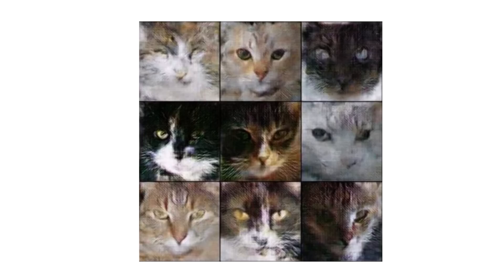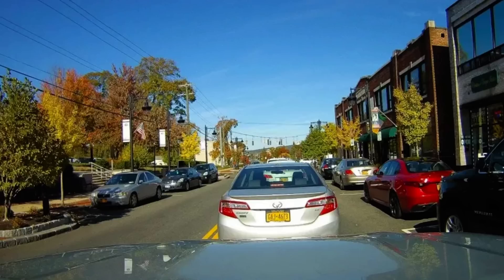Here are some examples of computer vision problems. Image classification, sometimes also called image recognition, involves taking a 64x64 image as input and figuring out if it contains a cat. Another example is object detection — if you are building a self-driving car, you don't just need to know that other cars are in the image, but also their position so your car can avoid them and draw bounding boxes around them. There may also be multiple cars in the same picture.